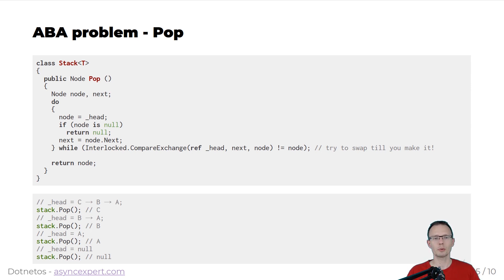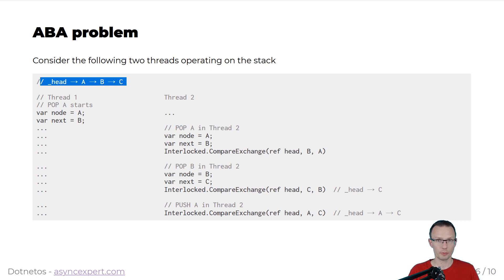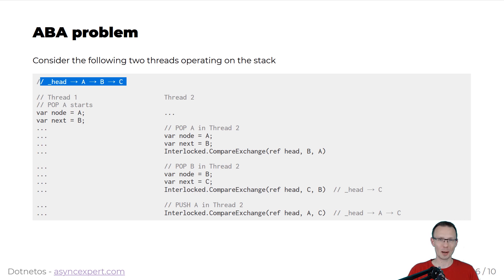So far we know a lot. We know how to use interlocked compare exchange. We know that we could use some kind of pooling, but we will just return and accept node objects, hoping that the caller will do the pooling themselves. So now we are prepared to validate our approach. Consider the following scenario: we have two threads that run very similar operations — they try to pop and push values onto the stack. As always, a thread's execution might be interrupted. We can inject these kinds of interruptions to see how it will work.